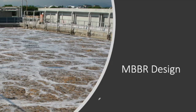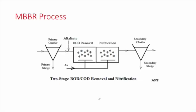Welcome to this lecture on MBBR wastewater treatment design. We will be covering one MBBR process out of many — a two-stage BOD/COD removal and nitrification. This MBBR process consists first of a primary clarifier, which is a primary treatment component to highly reduce total suspended solids, followed by the MBBR process made of two aeration tanks.